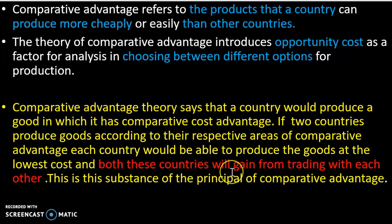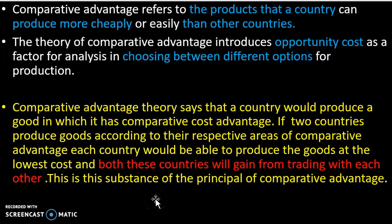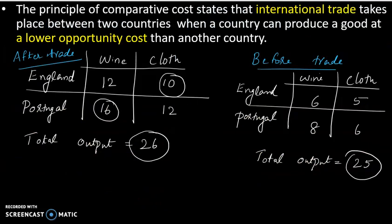This is the comparative advantage theory. The comparative cost advantage means a country produces in lower cost. This is the gain of trade. International trade takes place due to lower opportunity cost.